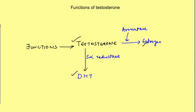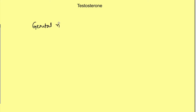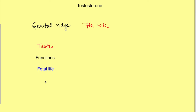Let us see which of these forms causes which functions. First of all, testosterone is produced from the genital ridge from the 7th week of intrauterine life, and then it is produced from the testis. Remember, testosterone is not required for the development of the testis since it is being produced from it. But it is required in fetal life for the differentiation of Wolffian ducts into the male reproductive tract.